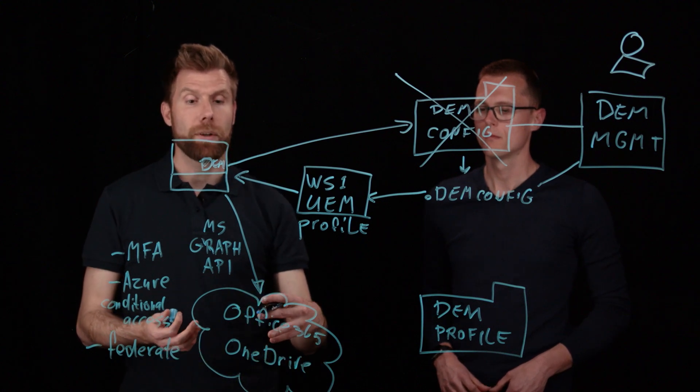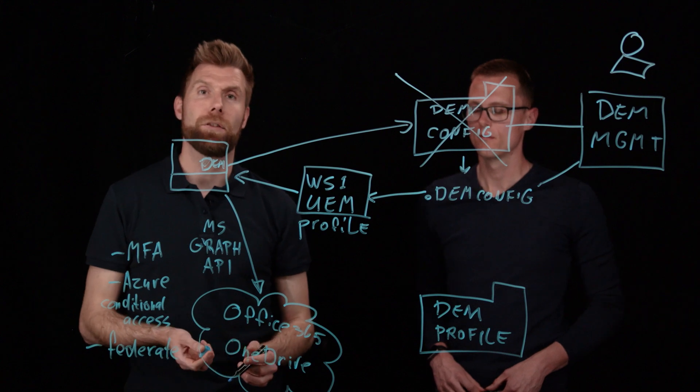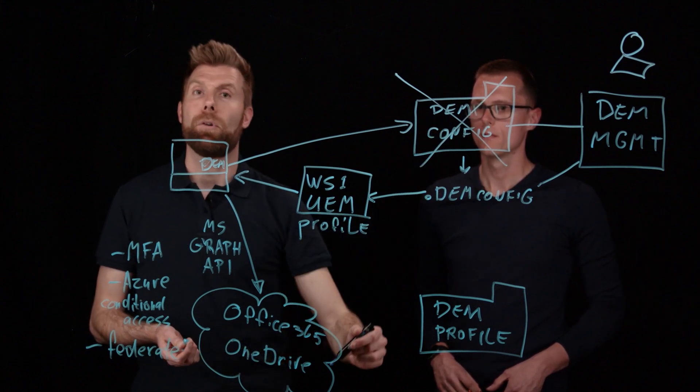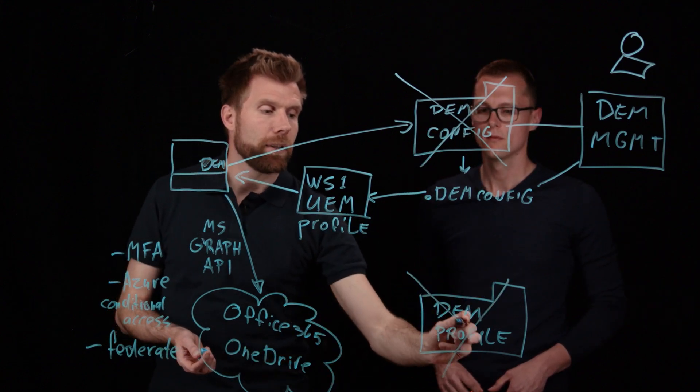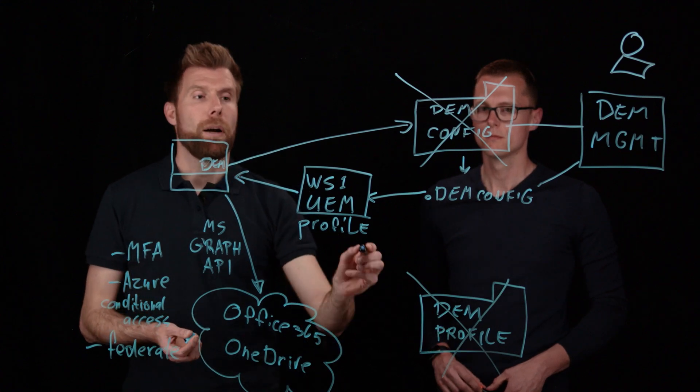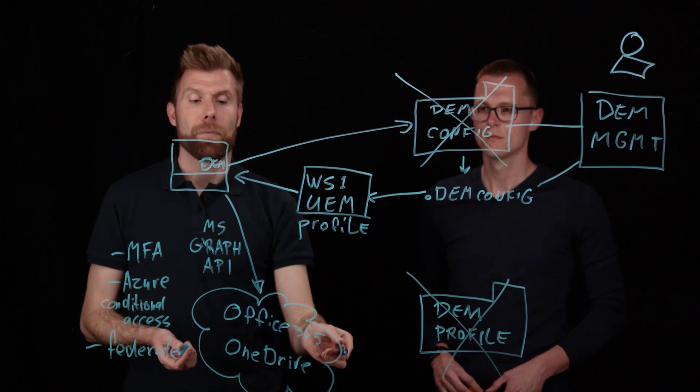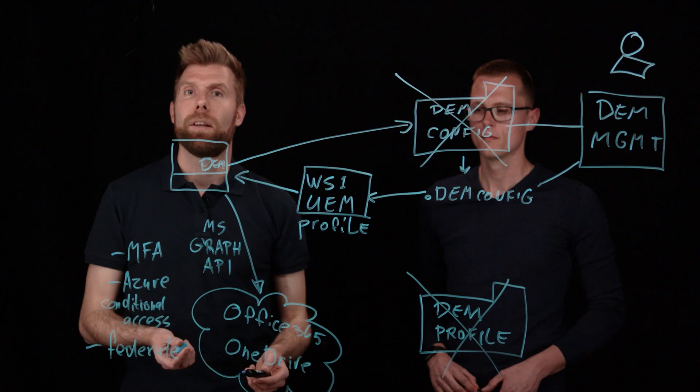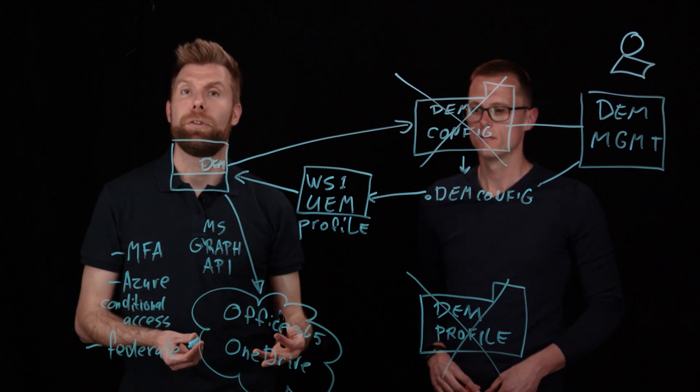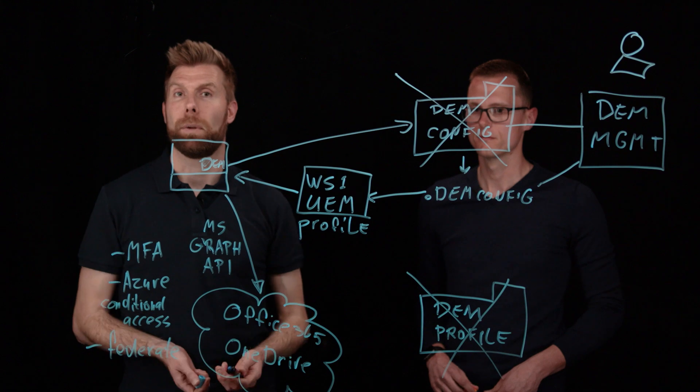And with this you can actually move completely towards the cloud. So you can get rid of your DEM config share on the network. You can get rid of your DEM profile share on the network by leveraging Workspace ONE UEM and OneDrive for business. And that way with DEM you can move towards the future and make sure that you leverage everything from the cloud.